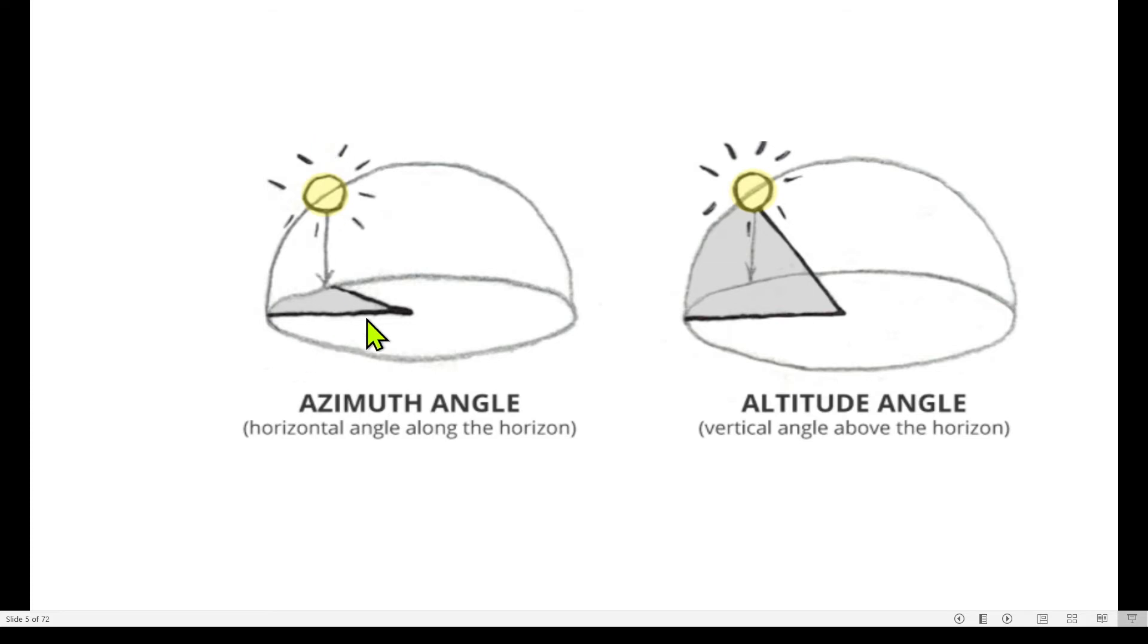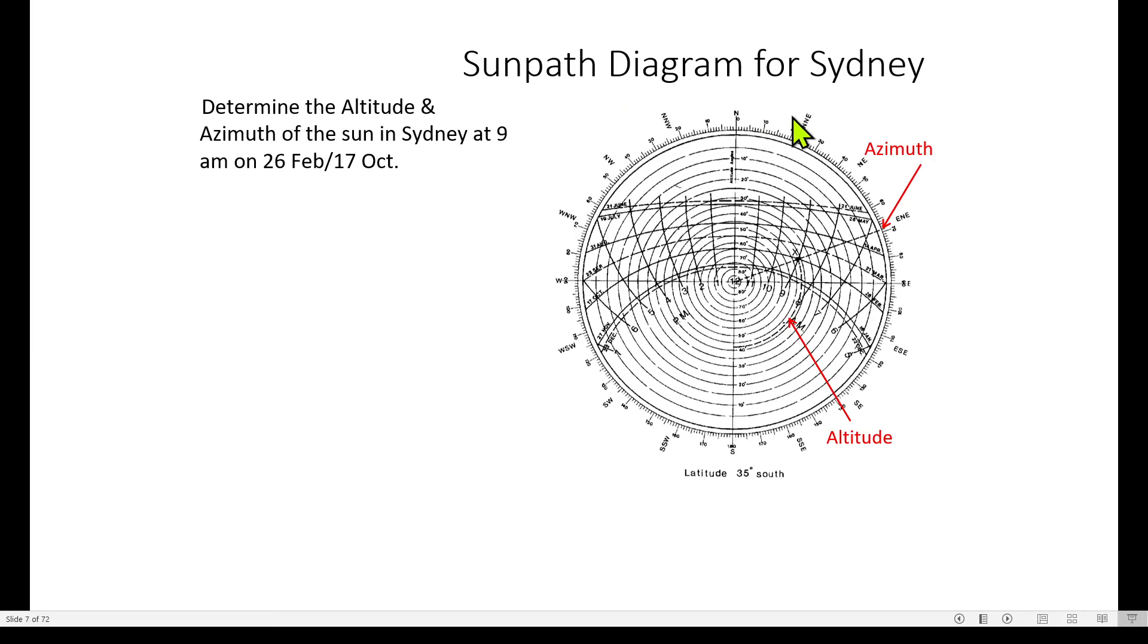Azimuth is the horizontal angle along the horizon, and altitude angle is the vertical angle along the horizon. Now I want to do the Sun path diagram for the city.